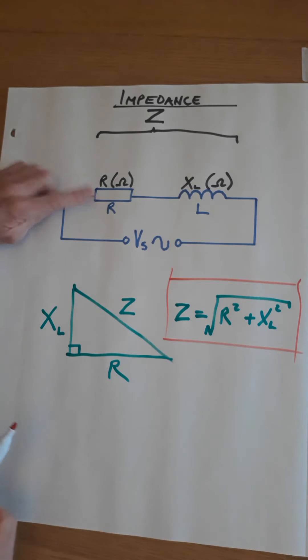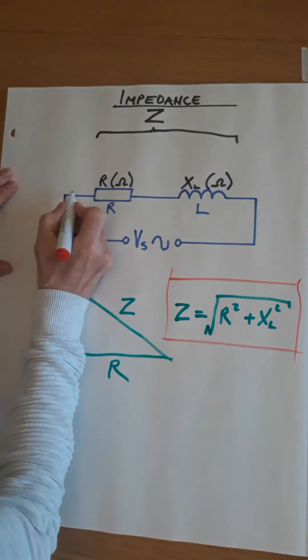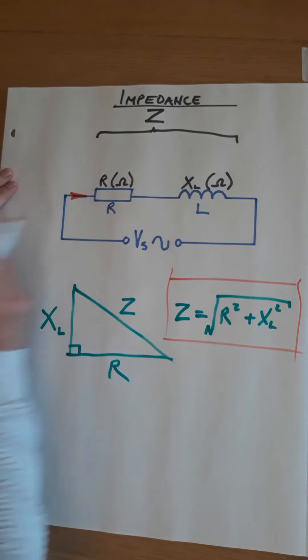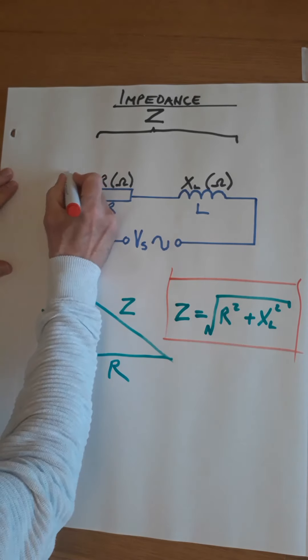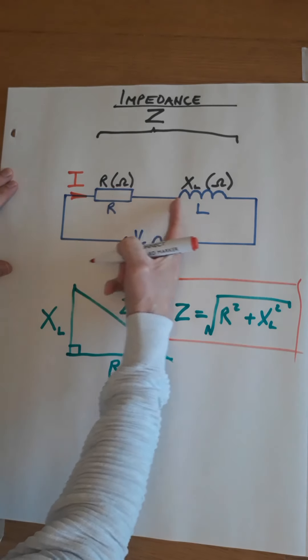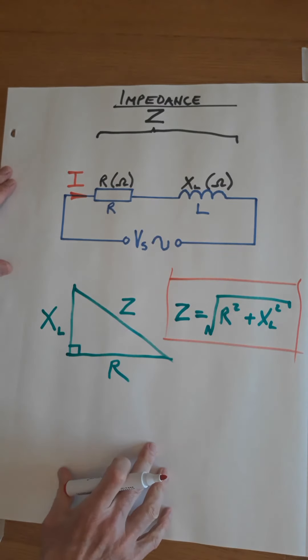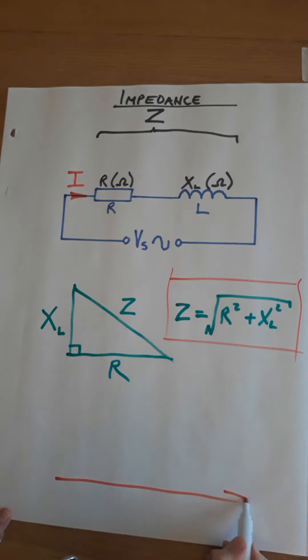We can calculate impedance using these values and that is an extremely common exam question. So the formula you're going to need is Z equals, and if you look at this, it's a right angle triangle, we can use Pythagoras to find Z. It's the square root of R squared plus XL squared.